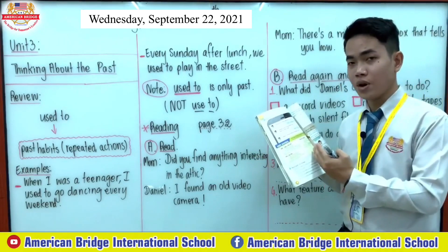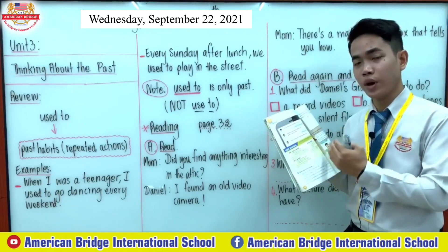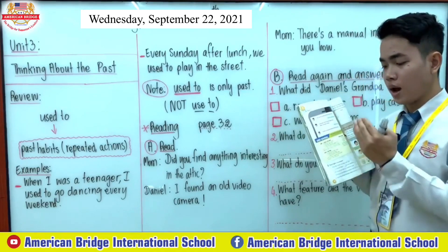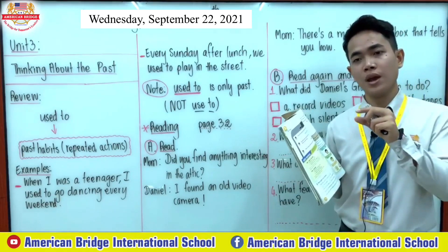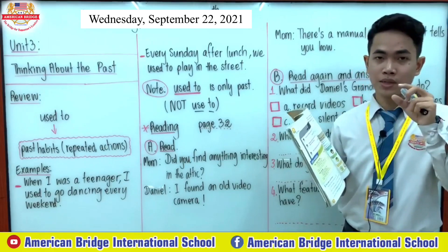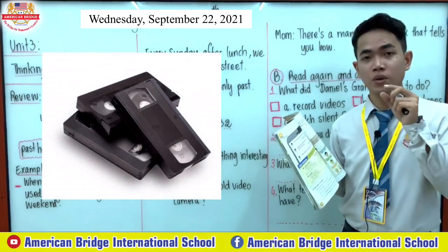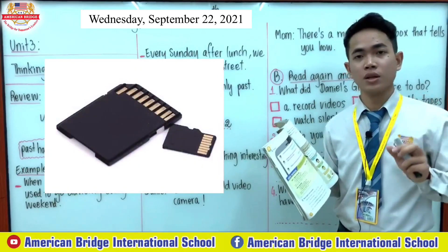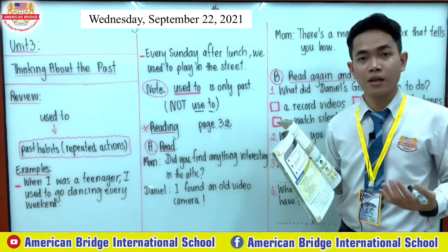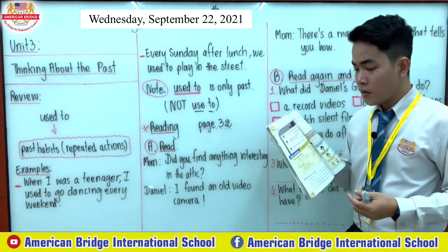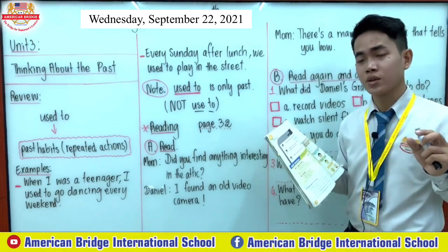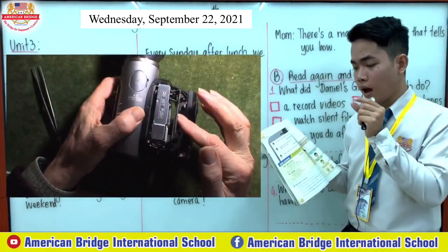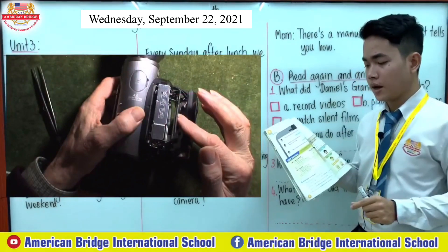Do you understand how to use that camera? I'll tell you some words you probably don't understand. Step one — the word 'load.' 'Load a VHS tape' — in the past, people used the tape, also called a cassette tape, to record video. But right now we have the memory card and card slot to keep our video files. So 'load' means to fill something — loading a VHS tape means filling a VHS tape inside the camera.